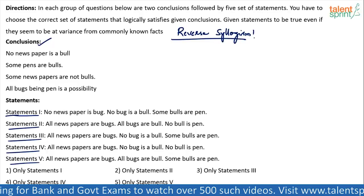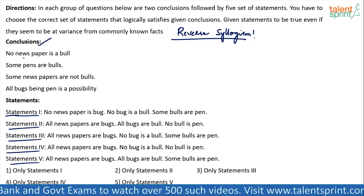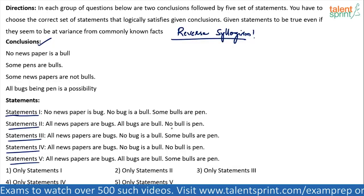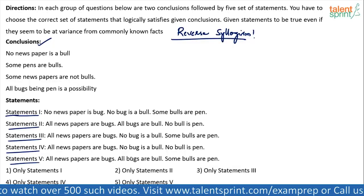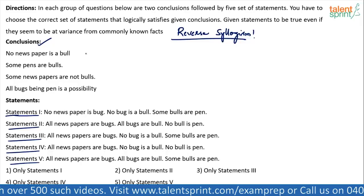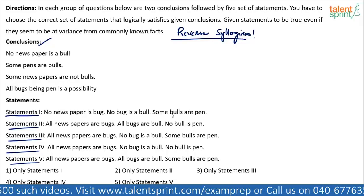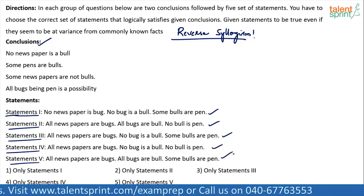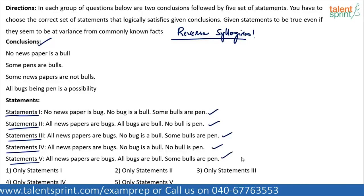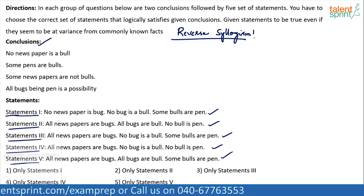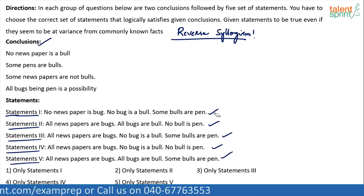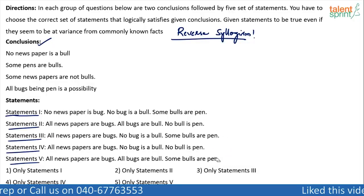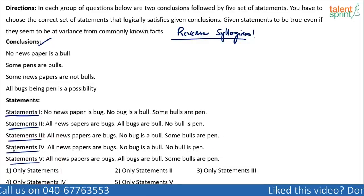Now look at the conclusions. What do we do? The same thing — you can draw basic diagrams and verify. You can draw a basic diagram for each of the five sets of statements and find out which set will satisfy all the given conclusions. But that's too time-consuming. If you have to draw a basic diagram for all five sets of statements, it will take a lot of time. So what we will do is first try to eliminate the wrong set of statements.